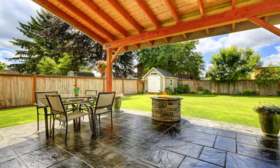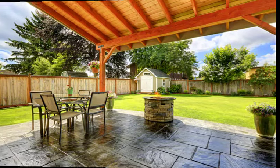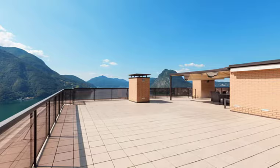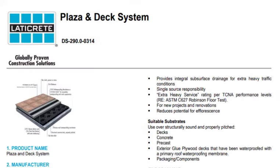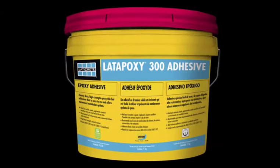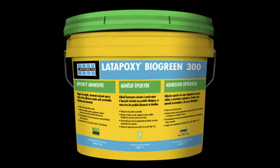If most of the moisture moves away from the slab, there's less chance for efflorescence to occur. For exterior installations over occupied spaces, we recommend something like our Plaza and Deck System, which prevents much of the moisture from staying in the mortar bed by allowing runoff water beneath the mortar bed to evacuate, leaving less moisture in the slab. Unfortunately, there is no clear-cut answer for the total elimination of efflorescence. The use of an epoxy setting material such as our Laticrete Epoxy 300 or Laticrete Epoxy Bio Green 300 adhesives may also help reduce efflorescence, but there is no guarantee it won't occur.